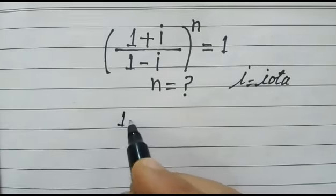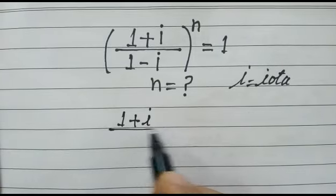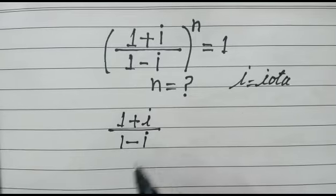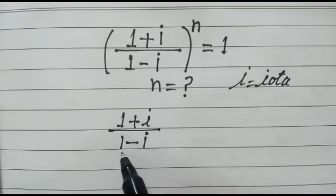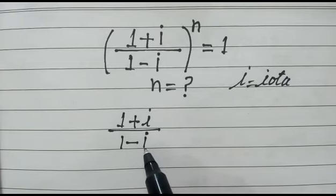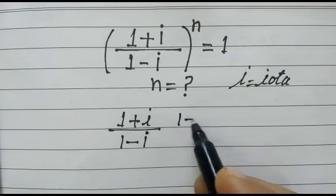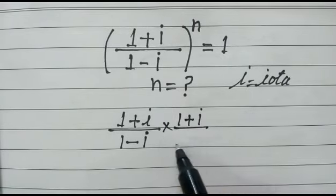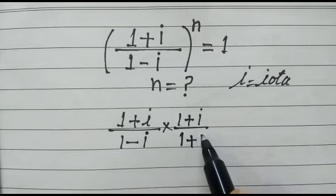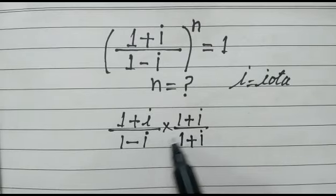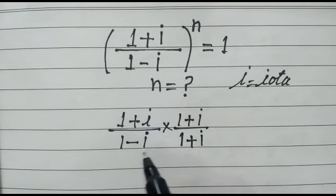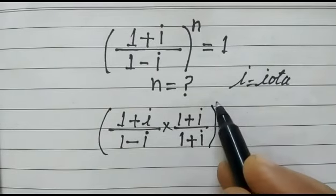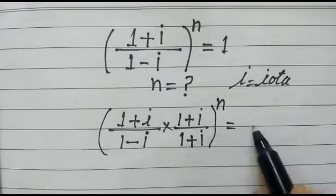We take (1 plus i) over (1 minus i) and multiply the numerator and denominator by the conjugate of (1 minus i). The conjugate of (1 minus i) is (1 plus i), so we multiply by (1 plus i) over (1 plus i). The whole expression to the power n is equal to 1.